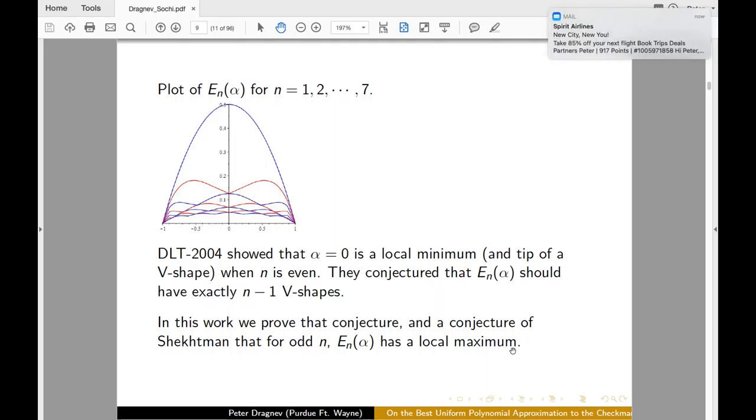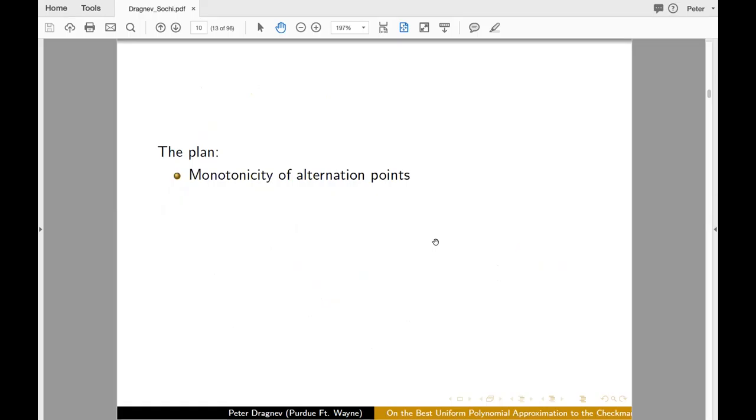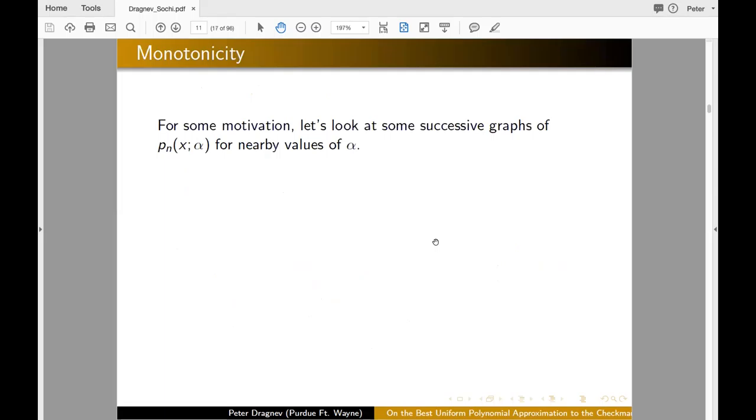So this will actually, I will use that opportunity with this picture to say what the results are. So we prove indeed the E_n alpha is local maximum when n is odd. So on the blue ones, we also prove that the number of V shapes is tied up increases with the degree. Namely, there are n minus one V shapes. That's different transitions as alpha increases. And we also prove that E_n alpha is analytic and we find a formula for the derivative. So moving on, the plan is to show first monotonicity of the alternation points in terms of alpha. Then we will discuss the analyticity of E_n alpha and show the Shekman's conjecture and the number of V shapes. I most probably won't be able to finish the talk, but at least you have the outline.